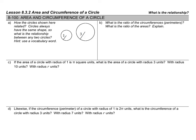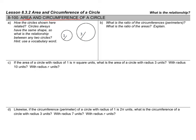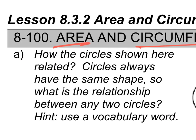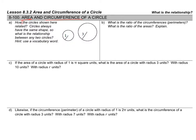Hi folks, let's jump into the notes page here. Problem 8-100: area and circumference of a circle. Part A of this problem says how the circles shown here related — that's clearly a typo. It should say: how are the circles shown here related? Now that we've fixed that, let's answer the question.